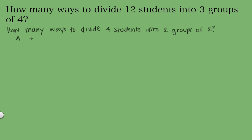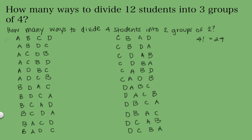Let's say that these students are called A, B, C, and D. We know that there are 4 factorial different ways, which is 24 different ways, to permute this group of 4 students. So let's go ahead and write those down — we get a list containing all 24 different permutations of these 4 students.